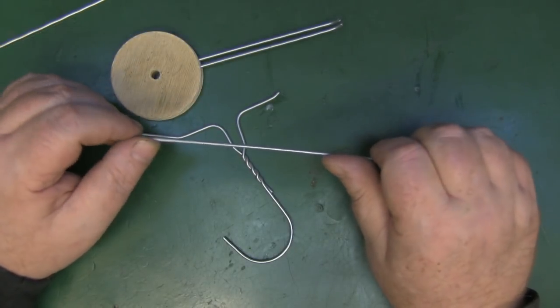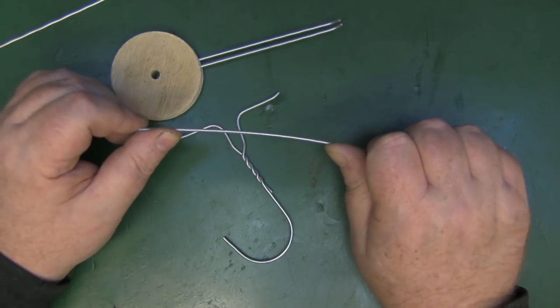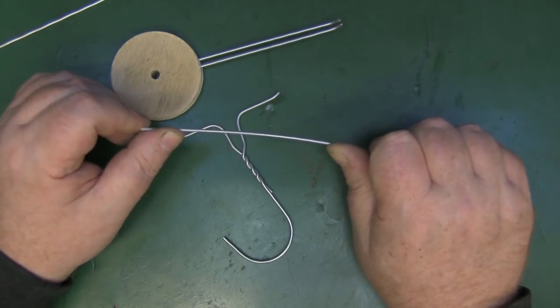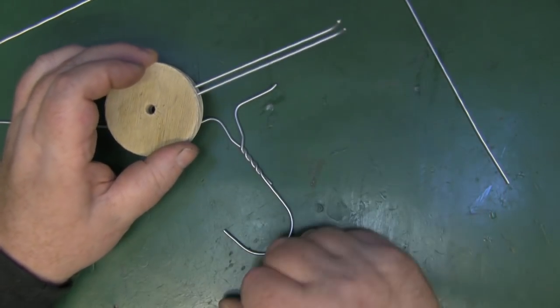What's nice about coat hanger wire as well is that it is a little bit springy, so you can slightly bend it and put tension on it and it will keep that tension to nip all the cables in place.